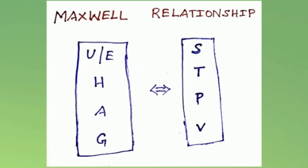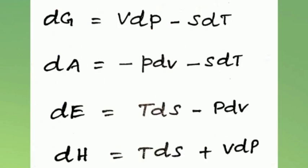The various expressions connecting internal energy U (or E), enthalpy H, Helmholtz free energy or work function A, and Gibbs free energy G, with relevant parameters such as entropy, temperature, pressure, and volume may be written as: from Gibbs free energy, dG = VdP − SdT; from work function, dA = −PdV − SdT; from internal energy, dE or dU = TdS − PdV; from enthalpy, dH = TdS + VdP.